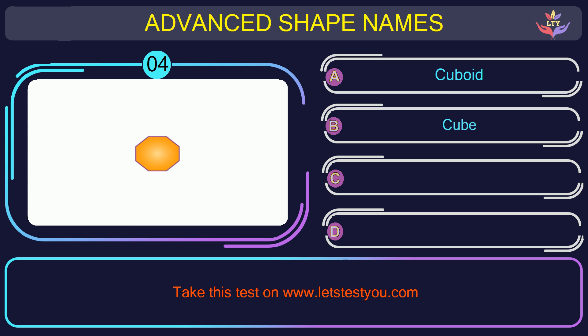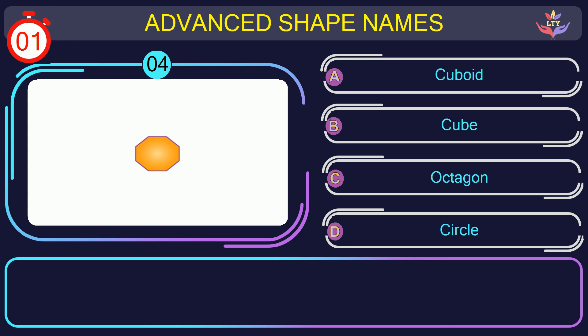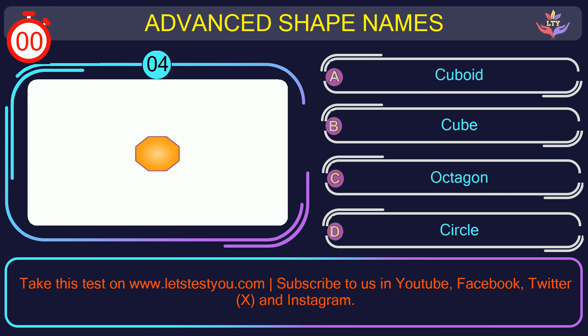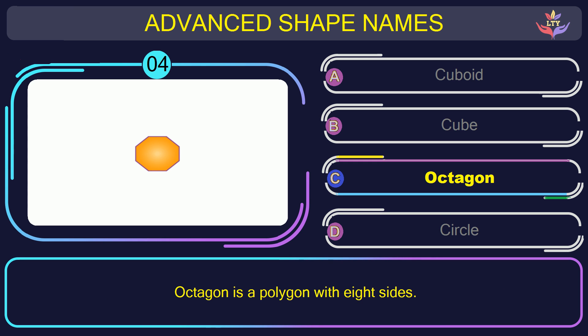Question number four. Could you figure out the name of the shape in this picture? The correct answer is option C. Octagon. Octagon is a polygon with eight sides.